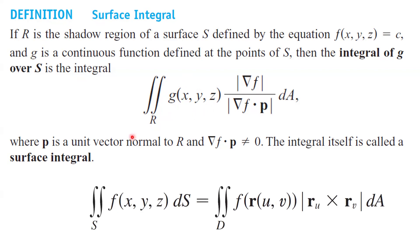The surface integral can be written as the double integral of f(x, y, z) dS, which in turn, if you use parametrization, becomes the double integral of f(r(u, v)) times the magnitude of the cross product between r_u and r_v, dA.